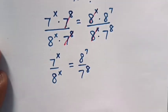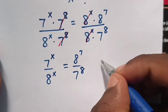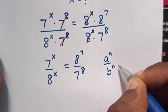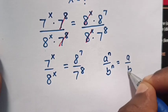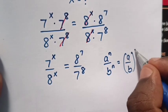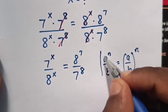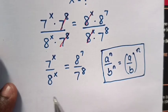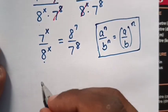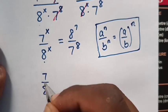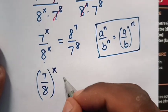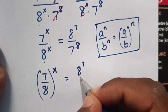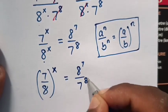Now, in our equation, we apply the exponential rule that a power n over b power n equals (a over b) bracket power n. So this rule will be applied to 7 power x over 8 power x. So it will be: (7 over 8) bracket power x equals 8 power 7 over 7 power 8.